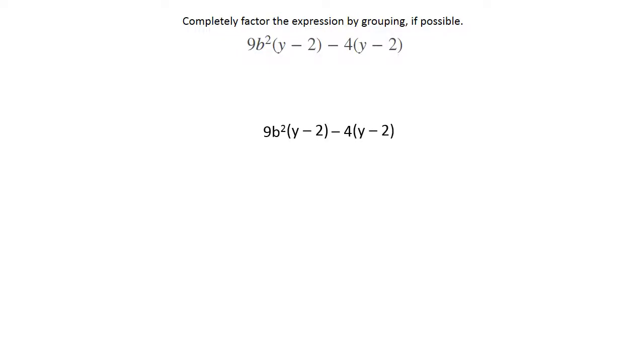So let's write the expression down. If you're counting terms, you're going to count the first big chunk of stuff and the second big chunk of stuff, so you've got two terms that you're identifying here. What do those two terms have in common? They have a y minus 2 in common, so that's a common factor.